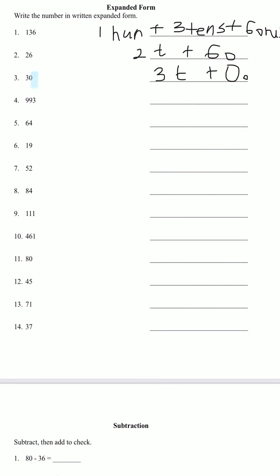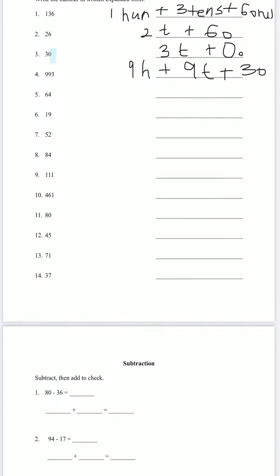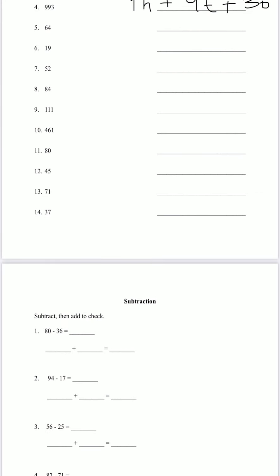993 is nine hundreds plus nine tens plus three ones. Okay? And let's try number five. We have 64. So six tens plus four ones. Right? Let's try number 10. Our number is 461. It is going to be four hundreds plus six tens plus one ones. Okay?